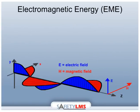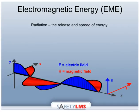Radiation is the release and spread of energy, both electrical and magnetic, in the form of rays or waves. Energy is produced by all electromagnetic sources, which include the sun, TV and radio, microwave ovens, the human body, etc.